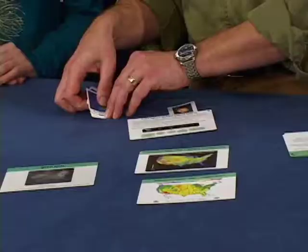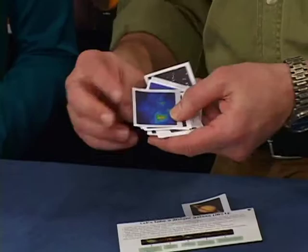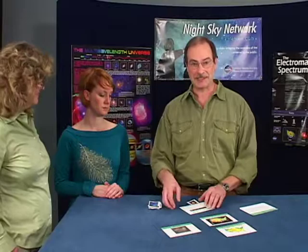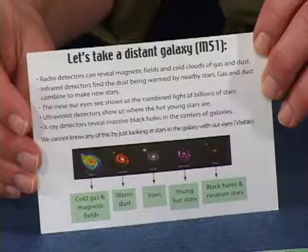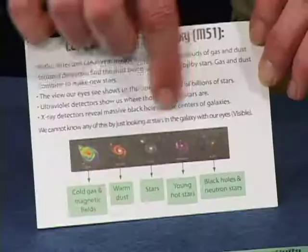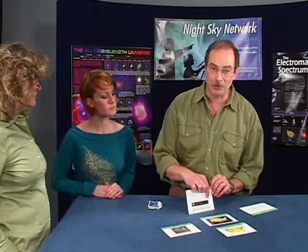Like the maps of the USA shown in different energies, these are images of various types of objects you might see in the telescopes tonight — like planets and star clusters, each in different energies of light. And other galaxies, yes. When we look at a galaxy in a telescope, our eyes see the light from the billions of stars in that galaxy. An x-ray telescope would reveal the black hole in the middle of that galaxy.